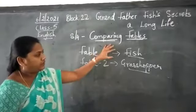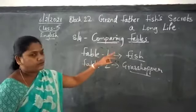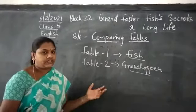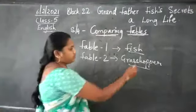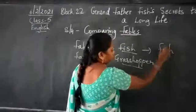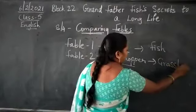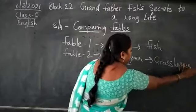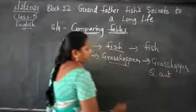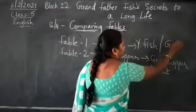Now how do we compare these two fables? We are going to compare them. For example, what are the characters — who are the characters in these stories? In this story, fish is the character, and in this story, grasshopper, ant, young fish, and grandfather fish.